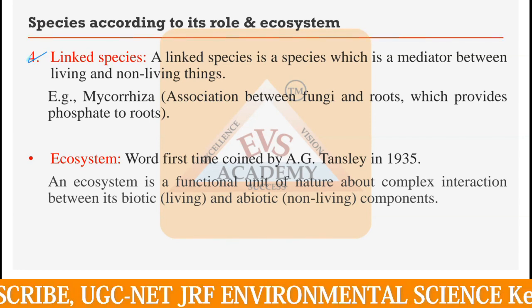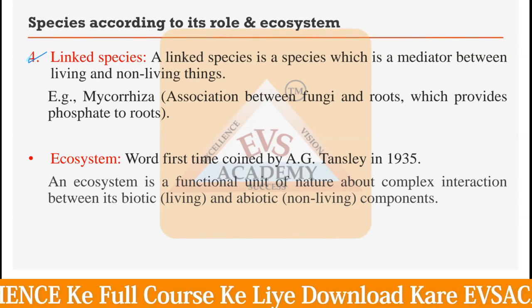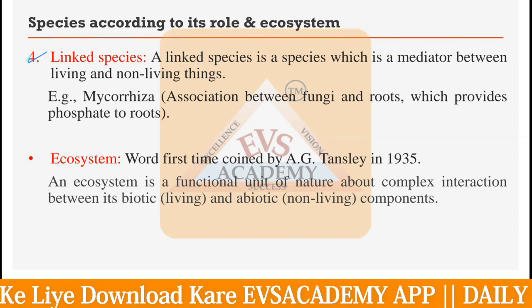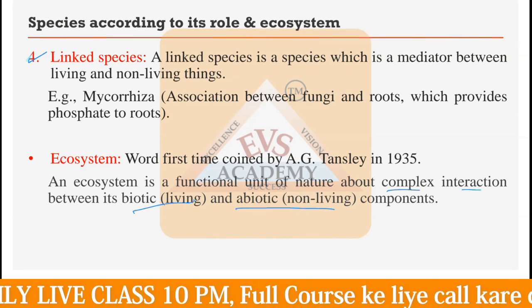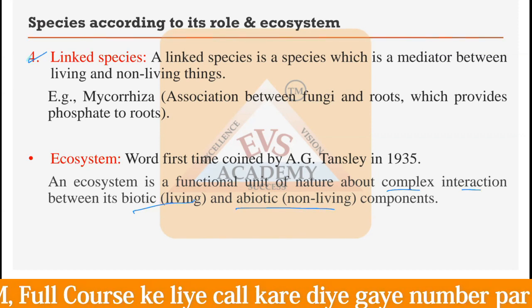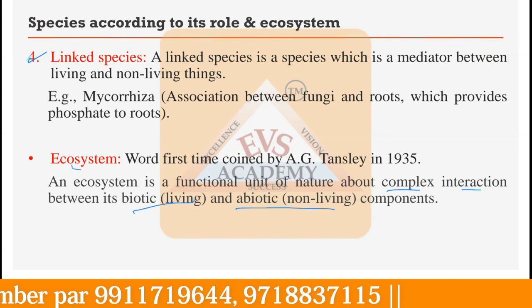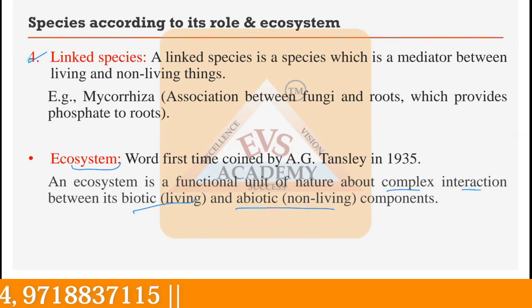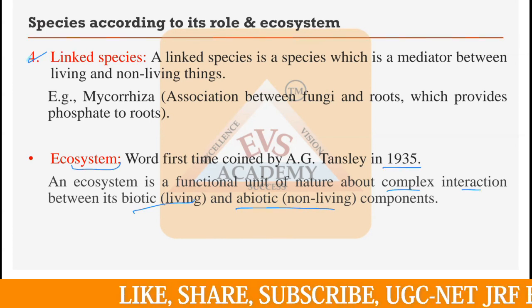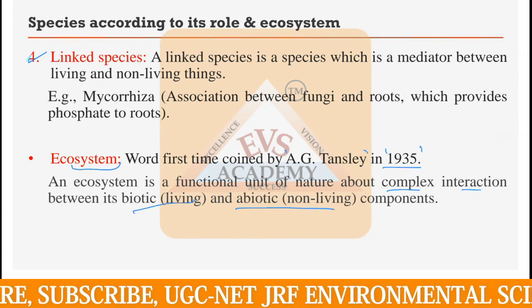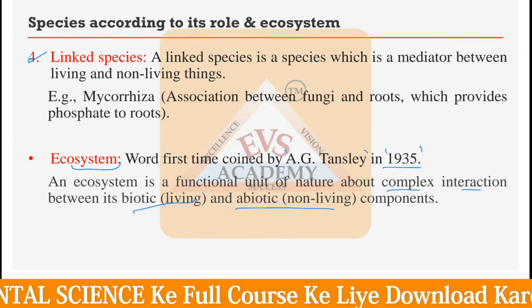That was all about the different kinds of species. The next term to discuss is the ecosystem. Till now we have only discussed ecology, which is the study of the environment. The ecosystem is a functional unit of nature involving complex interactions between the biotic and abiotic, or non-living, components. The word was first coined by A.G. Tansley in the year 1935, so the ecology term is older than this ecosystem term.